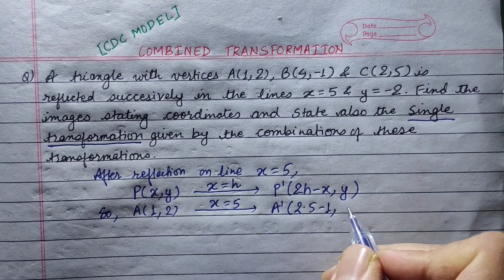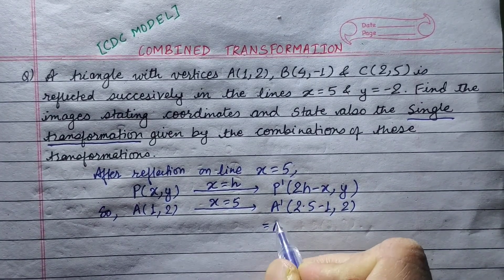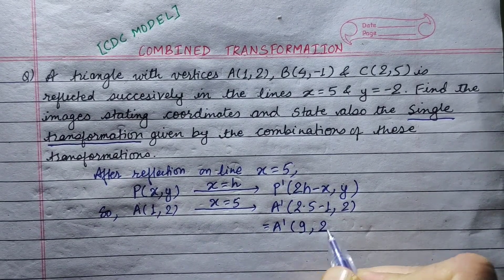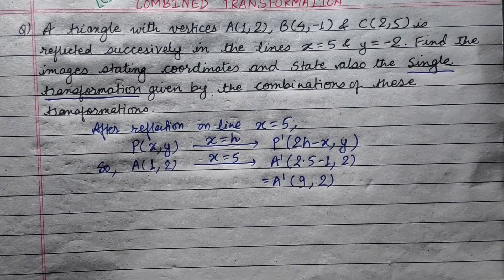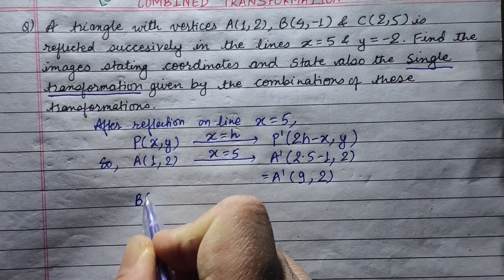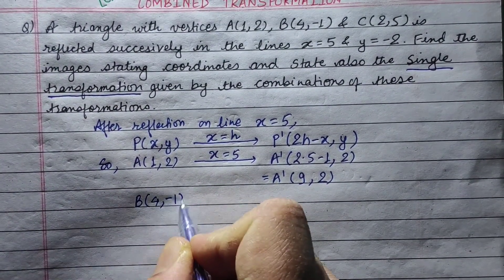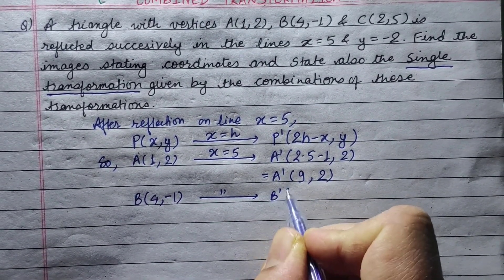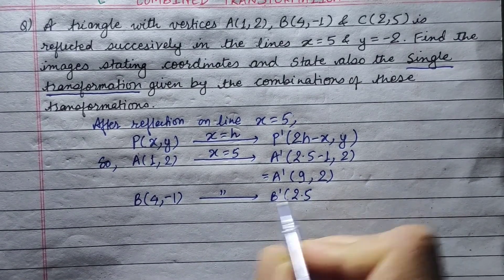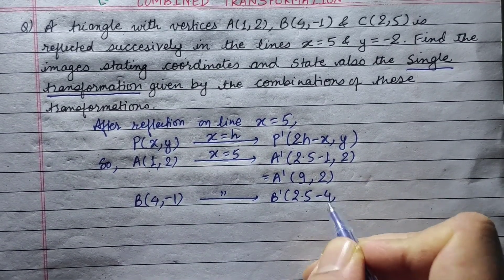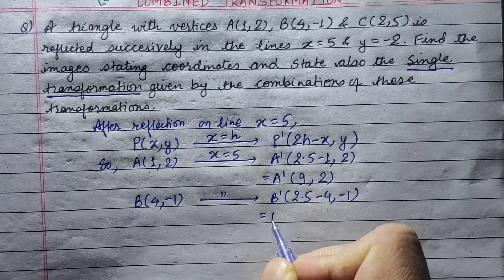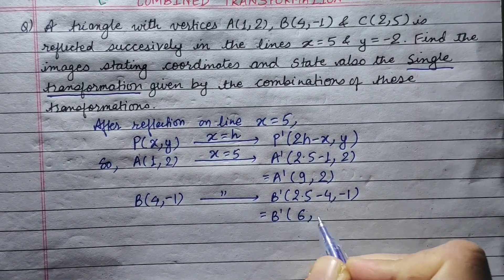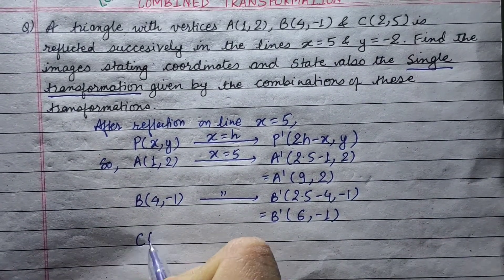For vertex A(1,2): applying x equals 5 reflection gives 2 into 5 minus 1, which simplifies to 10 minus 1 = 9. So A dash is (9, 2). For vertex B(4,-1): the x-coordinate transforms to 2 into 5 minus 4, giving 10 minus 4 = 6. So B dash is (6, -1).